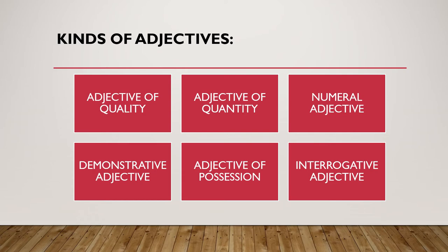Now, what are the different kinds of adjectives? These are: adjectives of quality, adjectives of quantity, numeral adjective, demonstrative adjective, adjective of position, and interrogative adjectives. These types of adjectives we are going to cover in today's class.